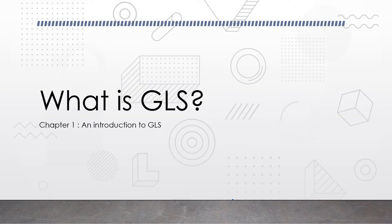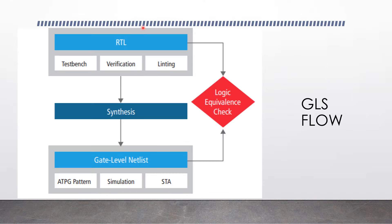Welcome to chapter 1 of the gate level simulation series. Today we will be discussing what a gate level simulation is. To understand gate level simulation we need to understand the flow. Gate level simulation is a simulation of the netlist with or without delays, and takes place after the synthesis of the RTL code or post place and route.